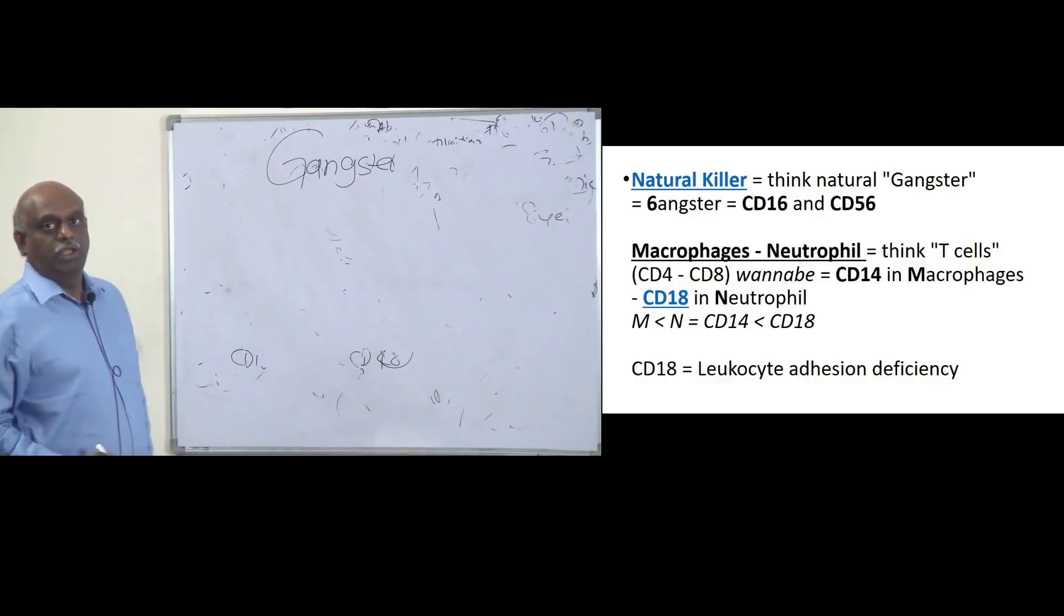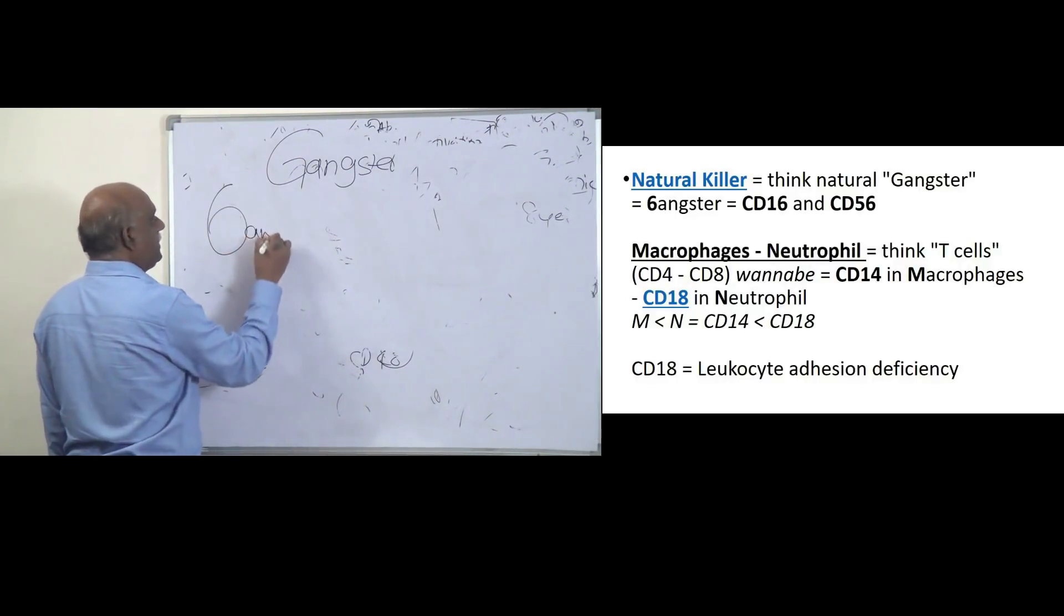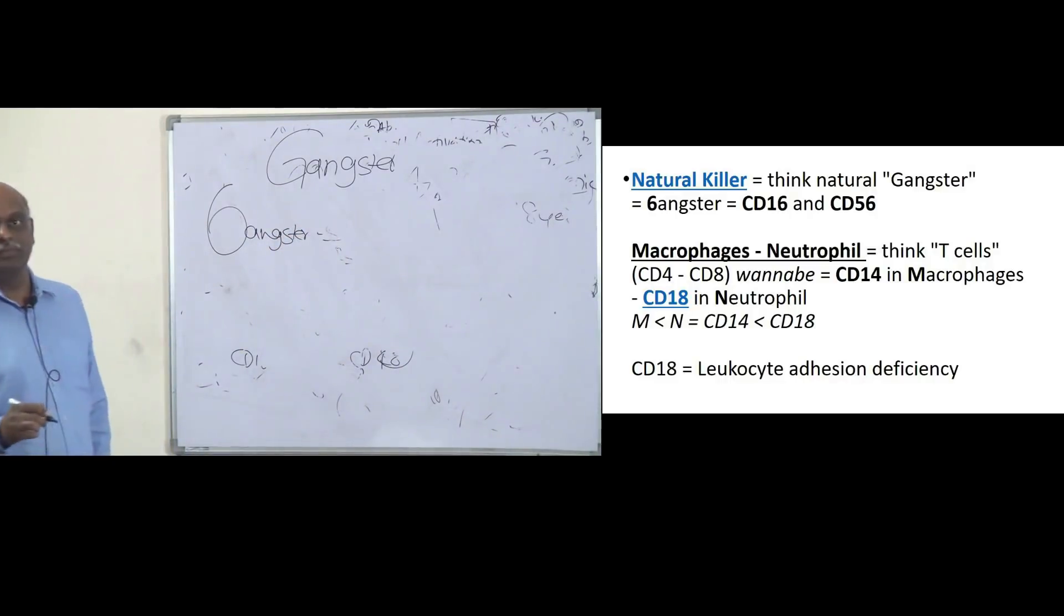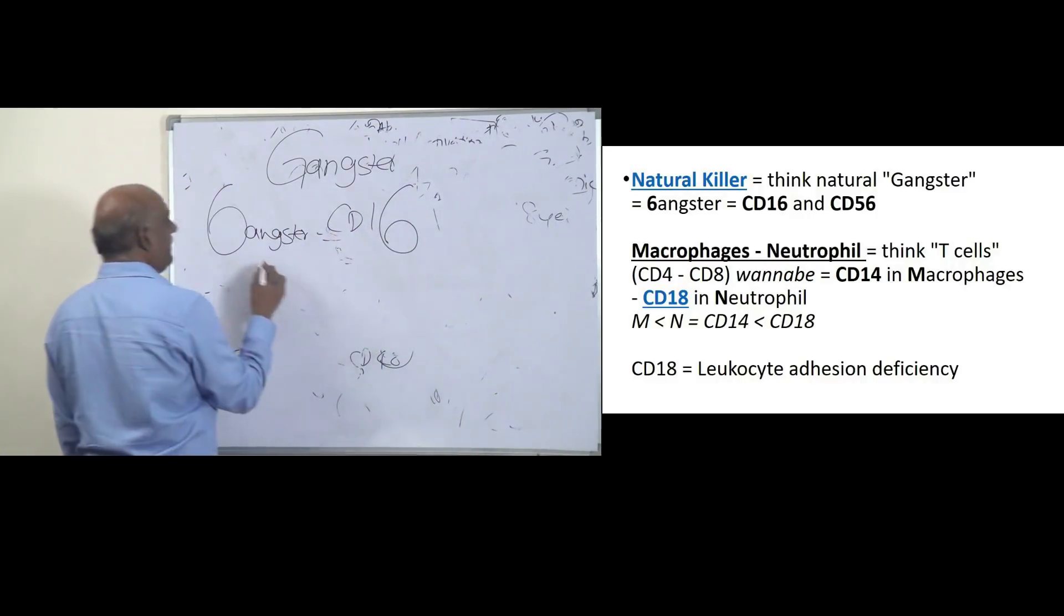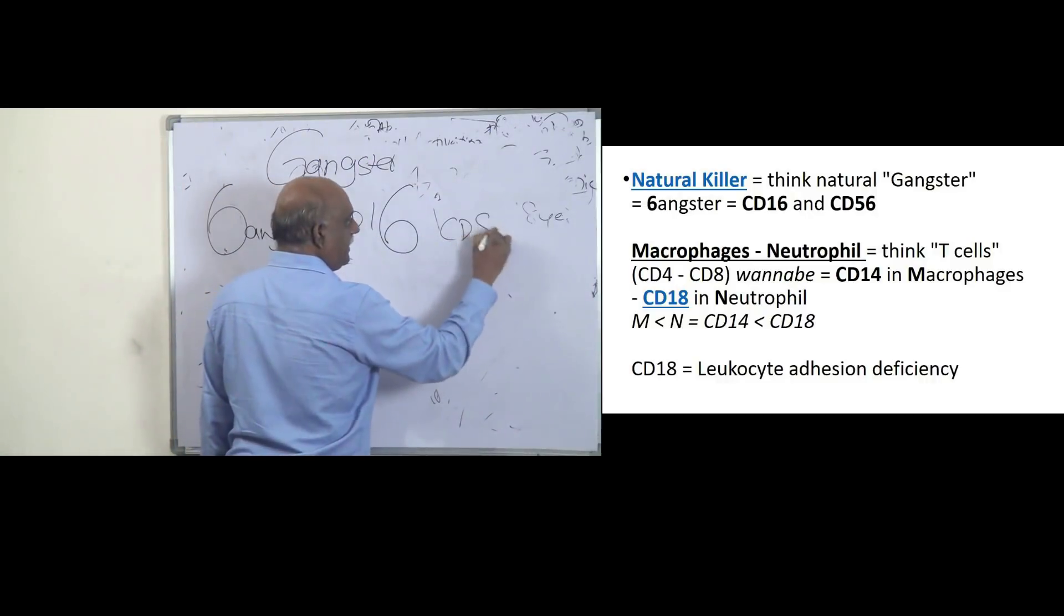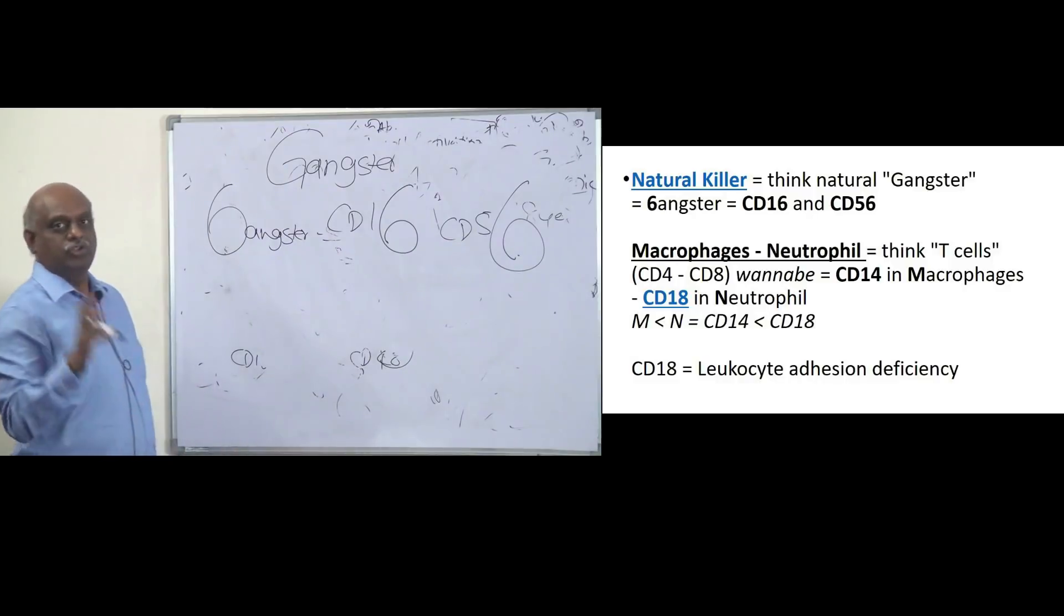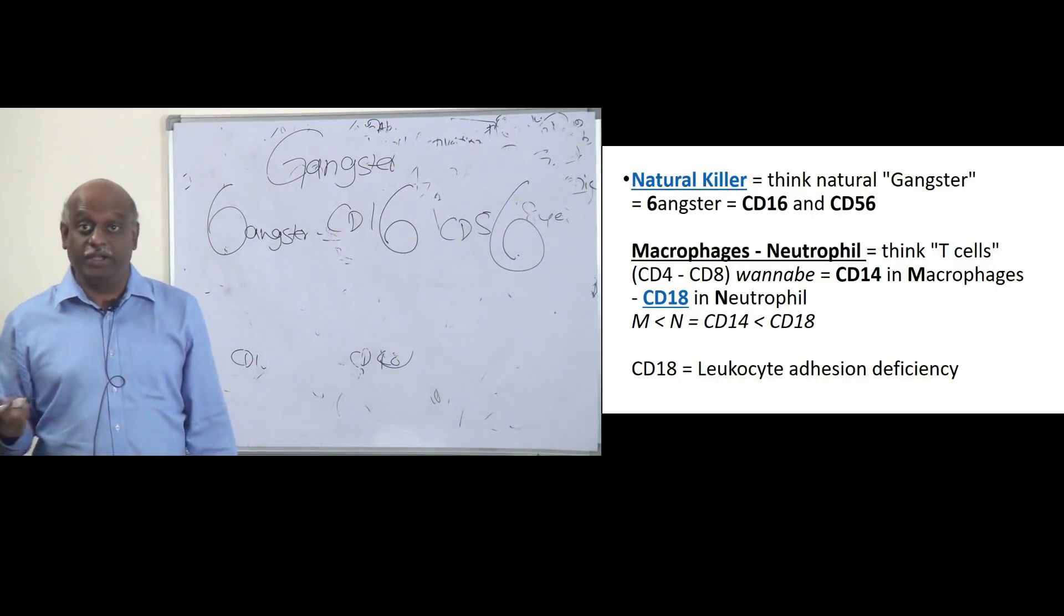So if you remember gangster, then what will you remember? CD16 also is gangster. CD56 is also gangster. The two gangsters are killer cells.